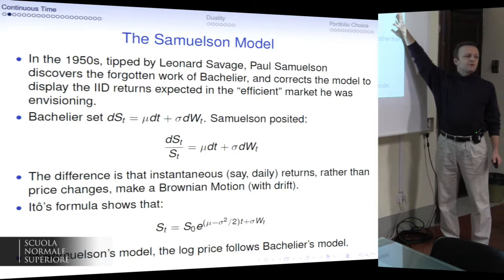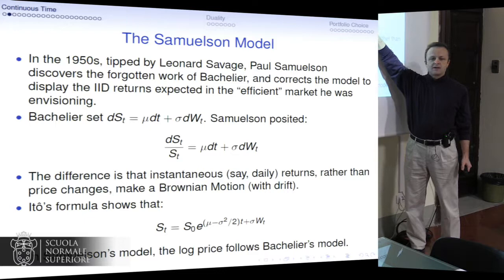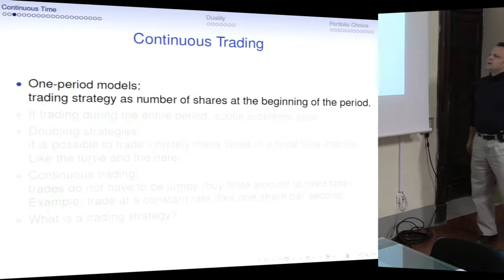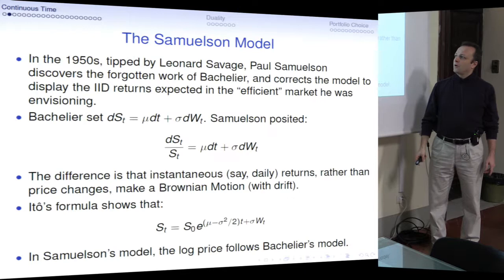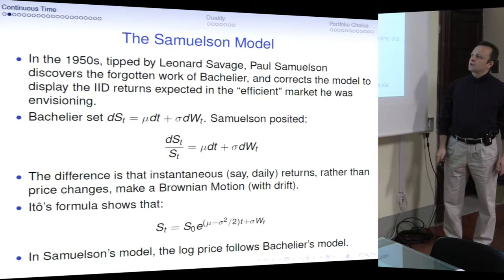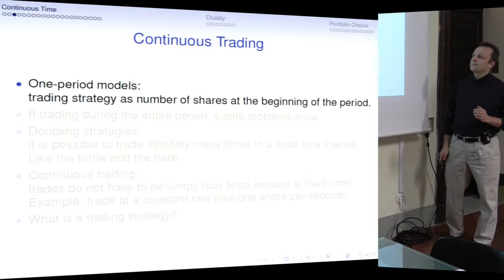This is basically the workhorse of stochastic finance. Anything that you cannot prove in more generality, you typically try to prove in this setting, and anything you can understand here typically has some application. What we are going to do now is some fundamental treatment of what continuous trading is all about, because before one can work in a model such as Samuelson without making logical mistakes, one needs to have a clear idea of what is a trading strategy, what is an admissible trading strategy, and what is not.